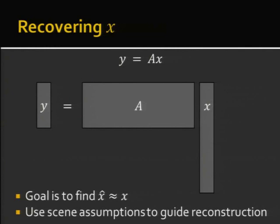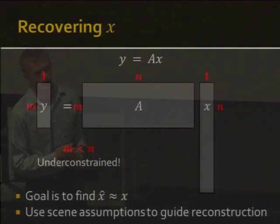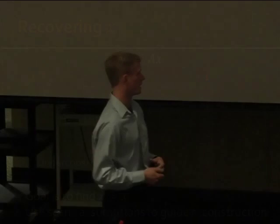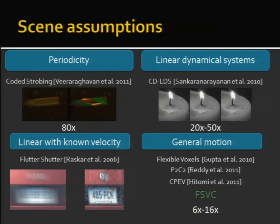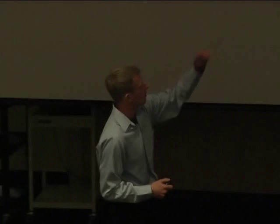Here's my recovery model: given Y and A, I want to find X, but this is severely under-constrained where the number of measurements Y is far less than the number of true elements N. So to recover my video, I need to introduce video priors. Various scene assumptions influence which priors we use. For periodic or quasi-periodic scenes, encoded strobing gives 80x compression; linear dynamical systems give 20–50x; and for linear motion with known velocity, the flutter shutter camera can de-blur images.